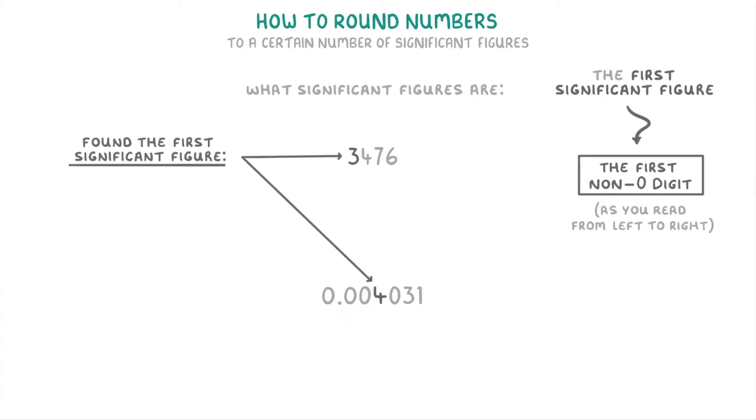Once you've found the first significant figure, every digit after it is another significant figure. So for 3476, this four would be the second significant figure, the seven would be the third, and the six would be the fourth.